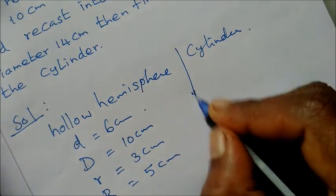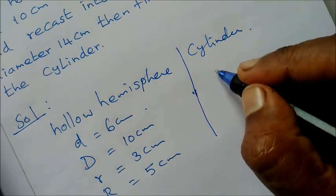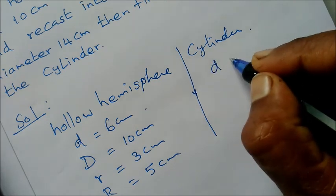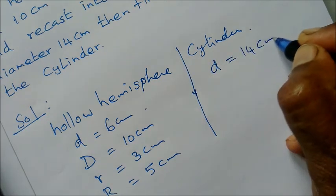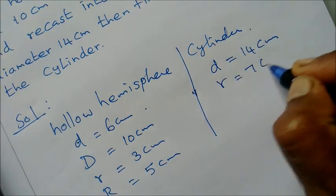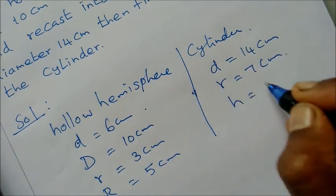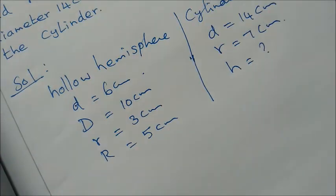Now we need to find out for the cylinder. For the cylinder, diameter d is 14 cm, so radius is 7 cm. Find the height.